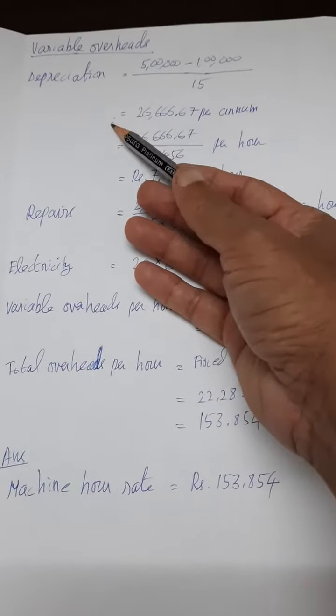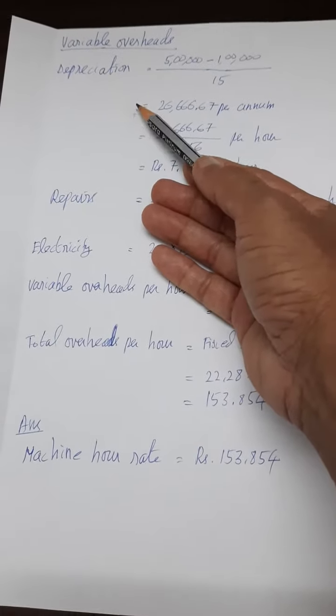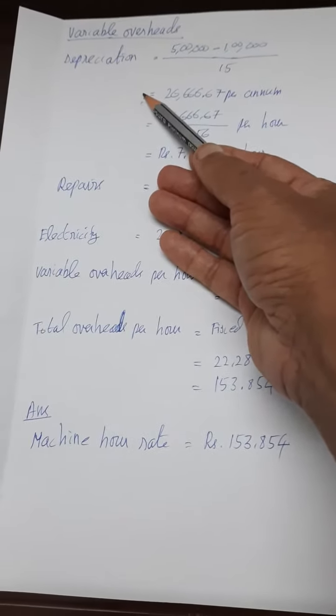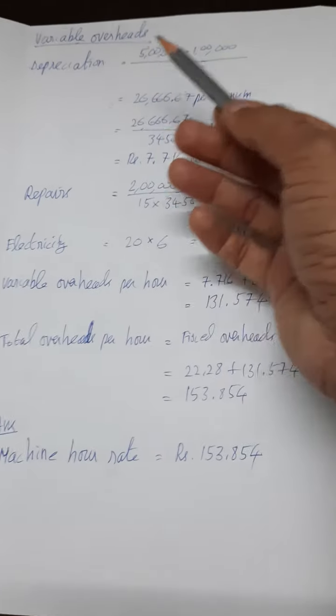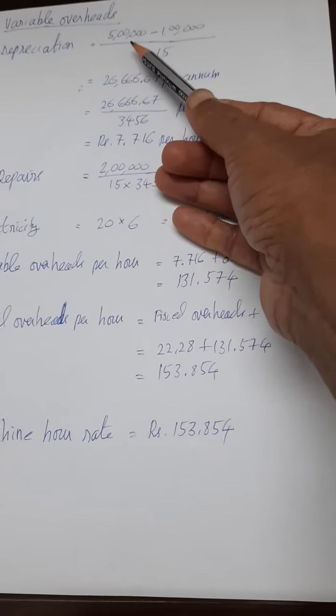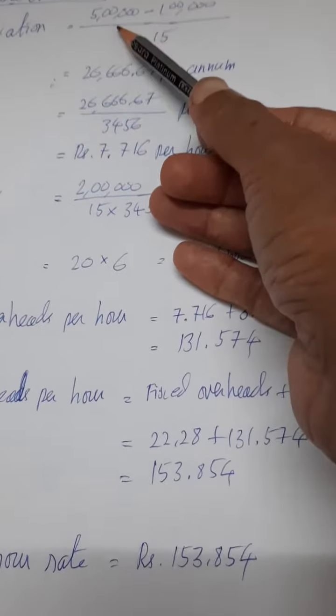Depreciation is nothing but the amount every year you have to apportion for the purpose of replacing an old machine. The lathe or any machine tool given in the problem is costing 5 lakh rupees.